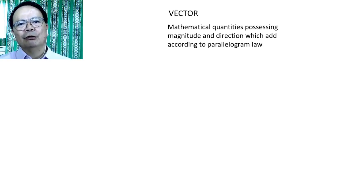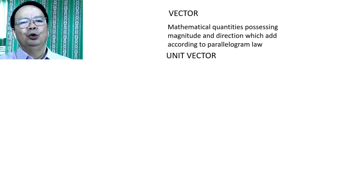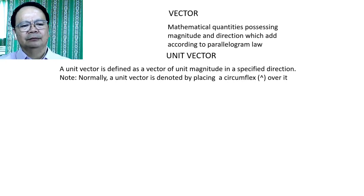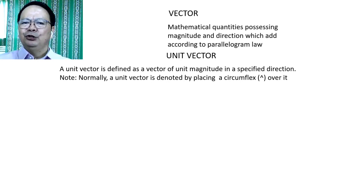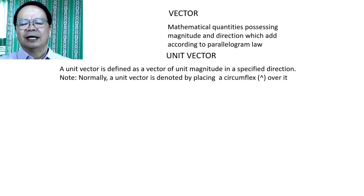We can also consider velocity and acceleration as some examples of a vector. Vector has direction. And how do we describe the direction? Let us have the definition of a unit vector. A unit vector is defined as a vector of unit magnitude in a specified direction — meaning it is a vector whose magnitude is equal to 1 and specifies a specific direction. Normally, a unit vector is denoted by placing a circumflex over it.